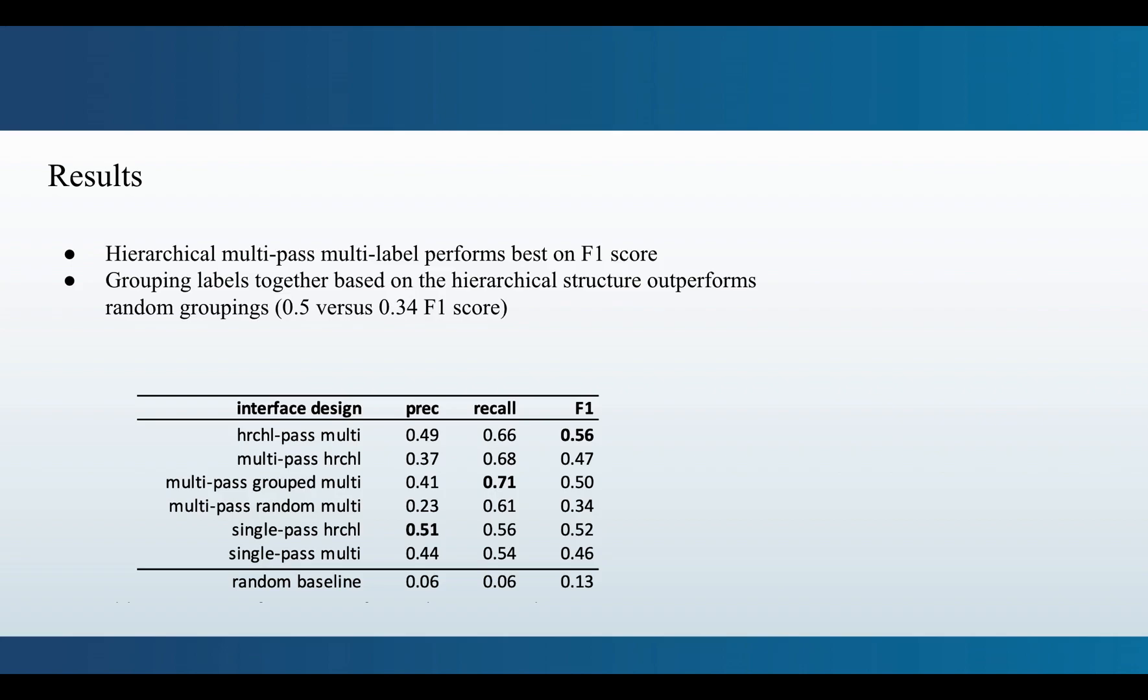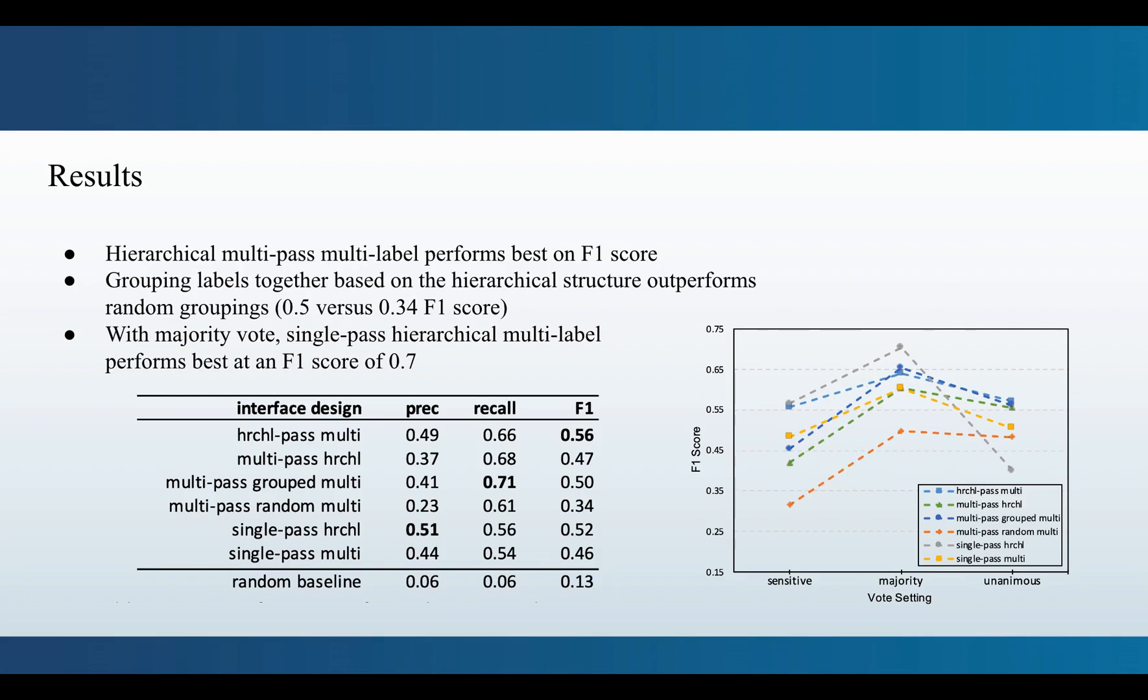By collecting multiple copies of annotations we have a crowd of workers vote on the final label. Adjusting this voting threshold can help balance the trade-off between precision and recall by lowering the sensitivity. So a majority vote, two out of three votes, the labeling scheme single pass hierarchical multi-label, that labeling scheme wins out with a final F1 score of 0.7.